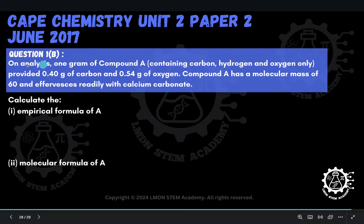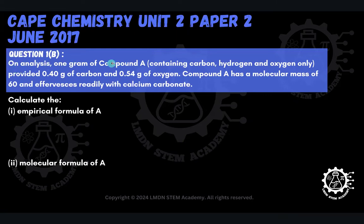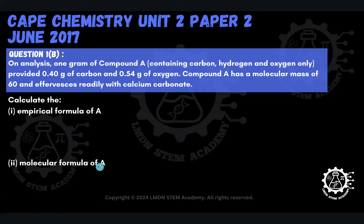The question reads that on analysis, one gram of compound A containing carbon, hydrogen, and oxygen only provided 0.40 grams of carbon and 0.54 grams of oxygen. Compound A has a molecular mass of 60 and effervesces readily with calcium carbonate. We are asked to calculate the empirical formula of A and the molecular formula of A.